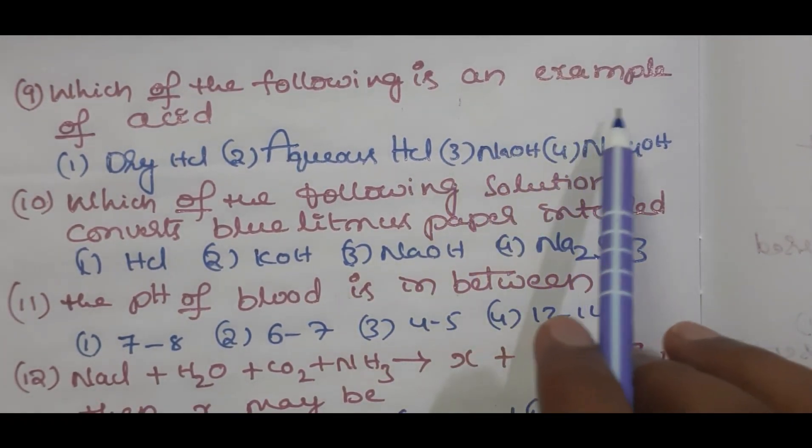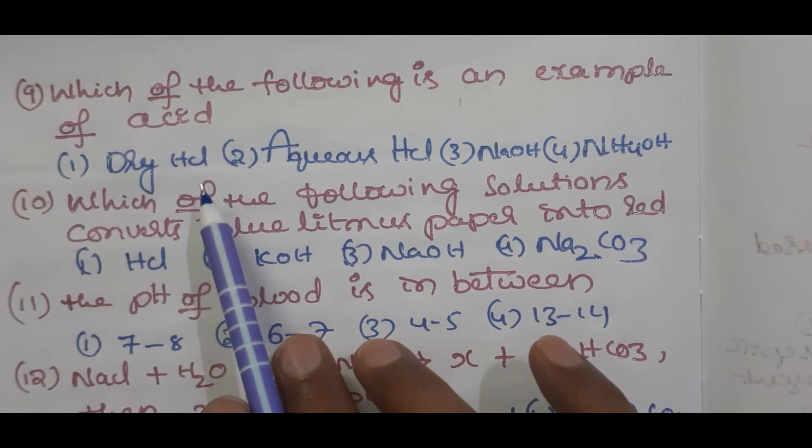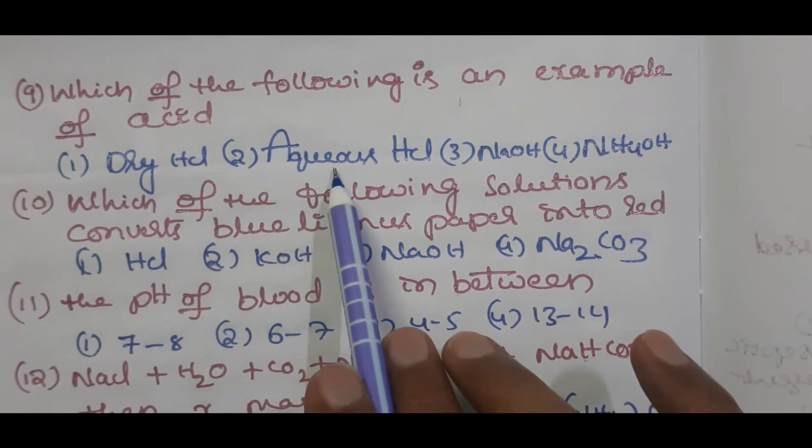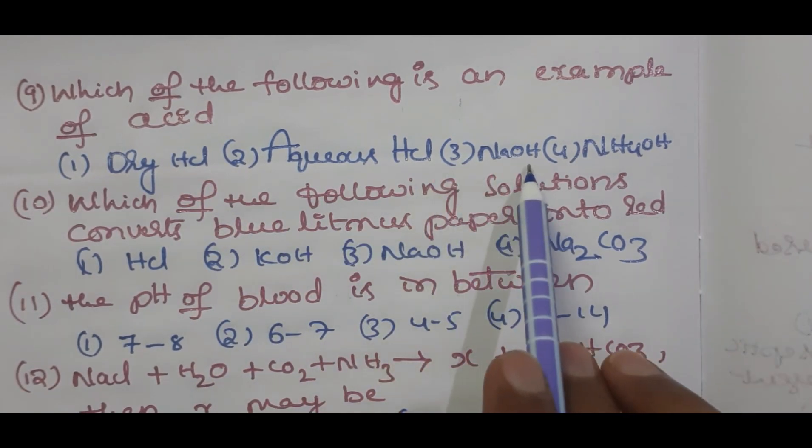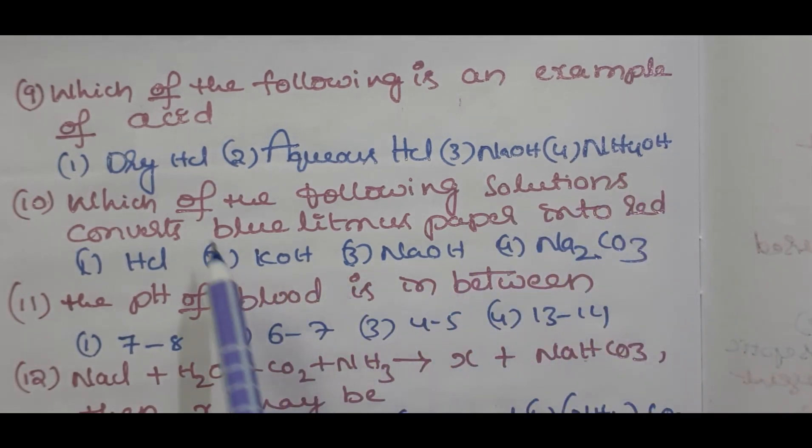Question number nine: which of the following is an example for acid - dry HCl, aqueous HCl, NaOH, NH4OH? Question number 10 students: which of the following solutions converts blue litmus paper into red - HCl, KOH, NaOH, Na2CO3?